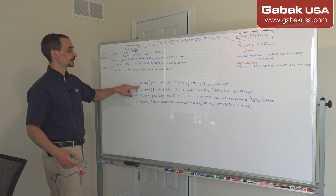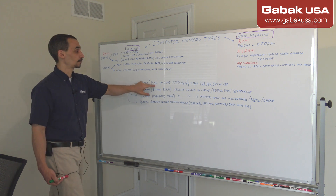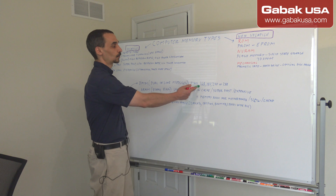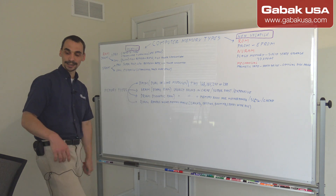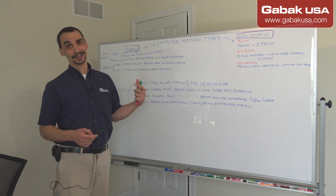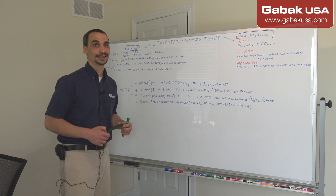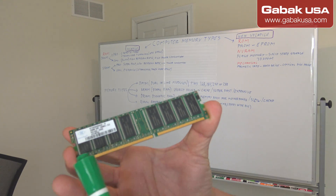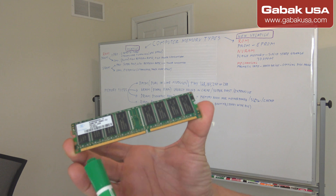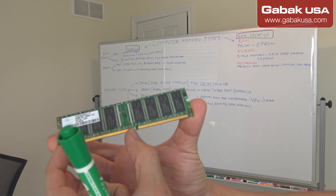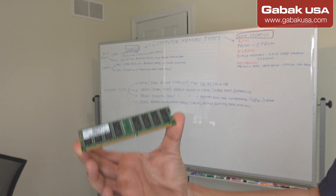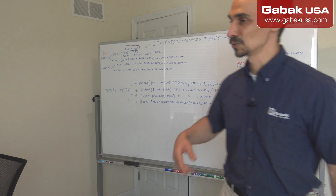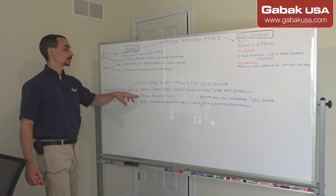For memory types, we have the DIMM — dual inline memory module. We have different pin counts: 168, 184, 240, and 288 pins, with older memories having fewer pins. I wrote here what is most common at least nowadays. Here I'm going to show you this stick of RAM. What dual inline module means is that we have contacts on one side and the other side. We have a notch in the middle — keep that notch in mind because I'm going to talk about that in a little bit.